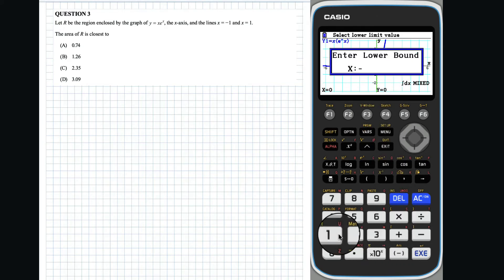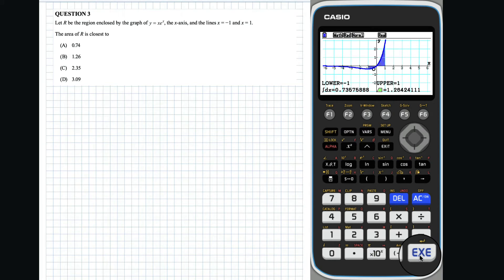We enter the lower bound as negative 1 and the upper bound as 1. The green shaded quadrilateral means area. So the requested area is 1.26, answer B.